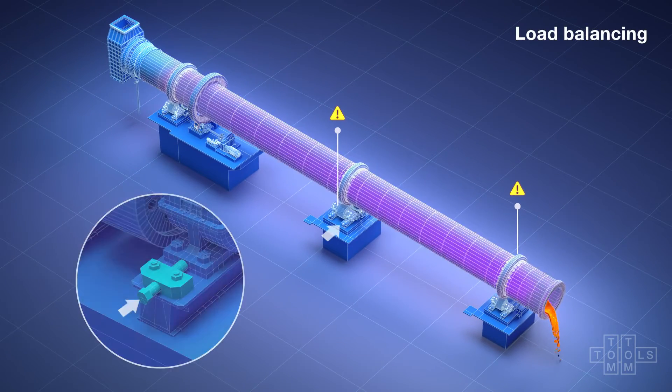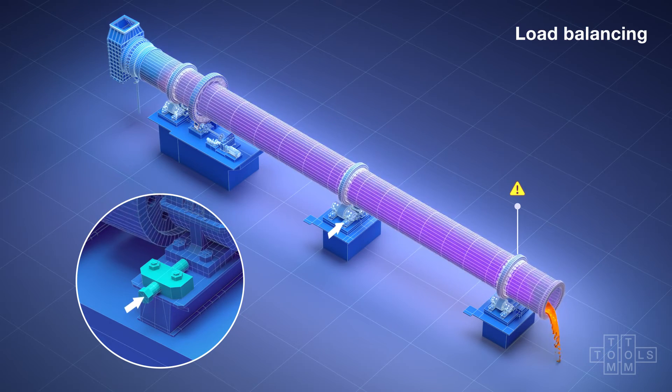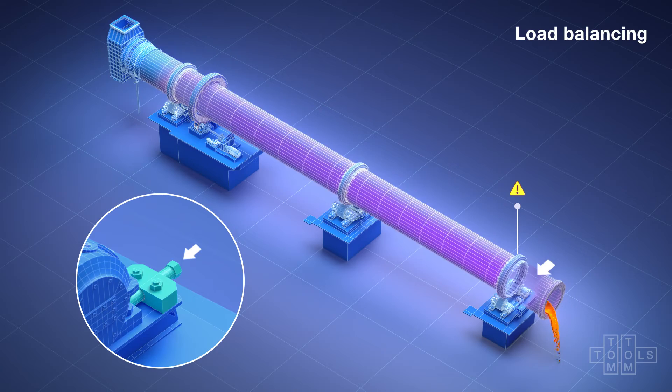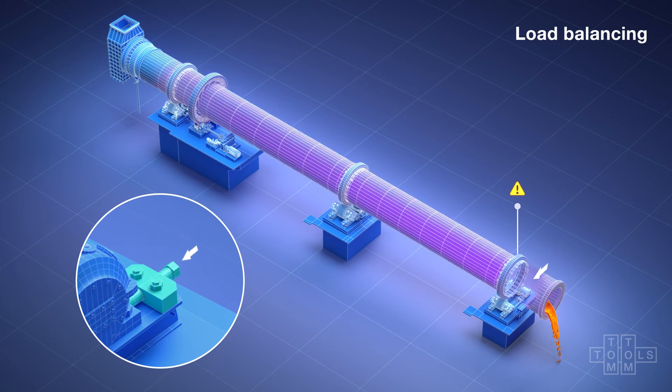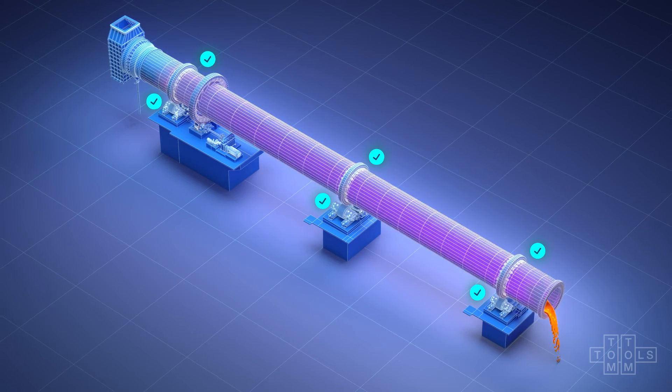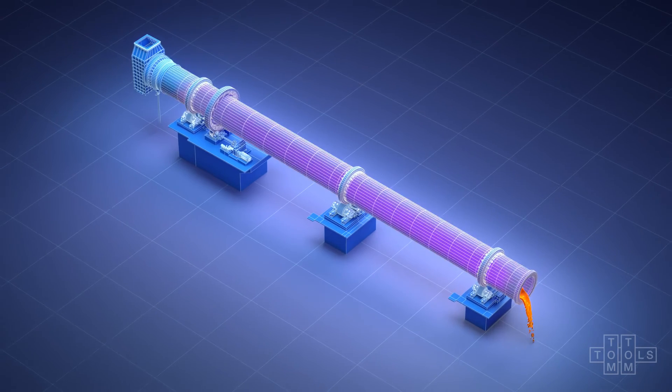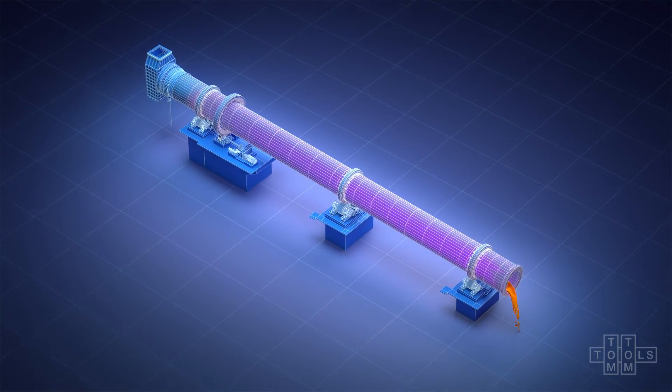Therefore, the skewing needs to be reduced on highly loaded rollers and slightly increased on low loaded rollers. Performing this load balancing will minimize the wear on rollers, tires and bearings and reduce the risk of production loss due to bearing failures.